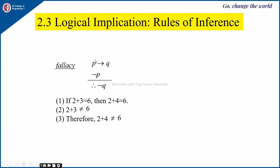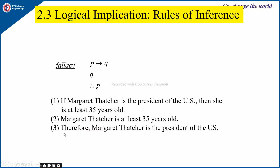Another fallacy: P implies Q is true and not of P is true, therefore not of Q. This is also false. Not of P being true means P is false. When P is false, Q could be either true or false — we cannot conclude not of Q. For example: if 2 plus 3 is 6 then 2 plus 4 is 6; 2 plus 3 is not equal to 6, therefore 2 plus 4 is not equal to 6. This is an example of fallacy on modus ponens.